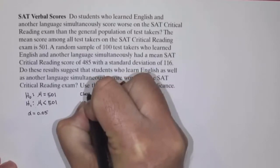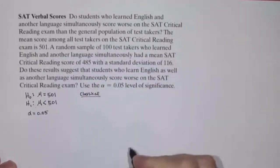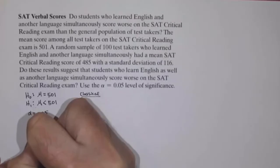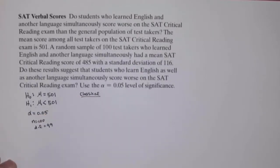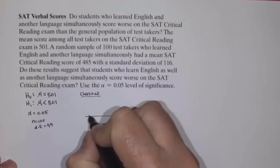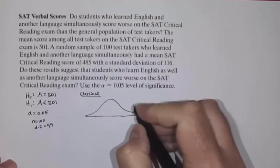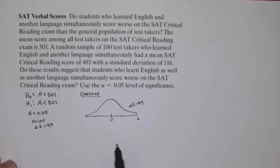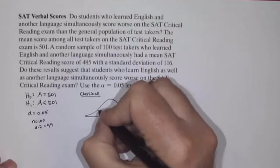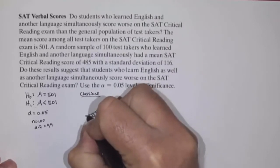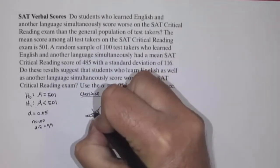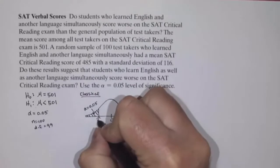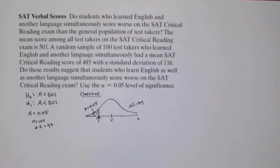Using the classical approach, we have a sample size of 100, so that means we're going to have 99 degrees of freedom. We'll use a t-distribution with 99 degrees of freedom. Since our alternative hypothesis is less than, we're going to be looking at the left tail. The area in the left tail needs to be alpha equals 0.05, and we need to determine the critical value. Since this is in the left tail, the critical value is going to be negative.